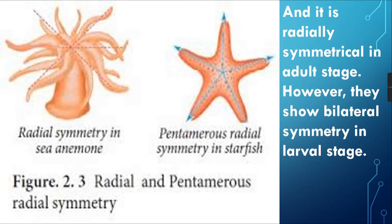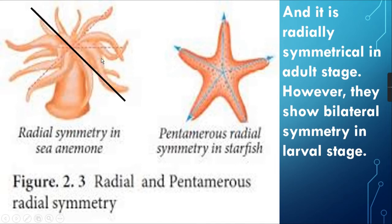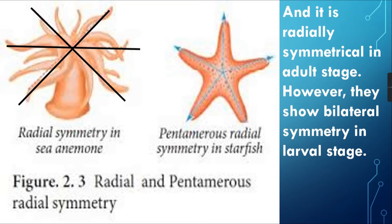Echinoderms are radially symmetrical in the adult stage. However, they show bilateral symmetry in the larval stage — at the beginning stage it is bilateral, but when fully mature it becomes radially symmetrical. For example, sea anemone shows radial symmetry — if cut along one plane, it can be divided into two equal halves.